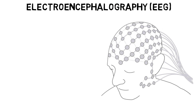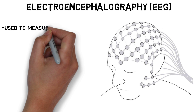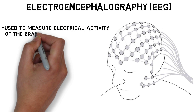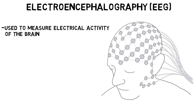Electroencephalography, or EEG, is a technique used to measure the electrical activity of the brain. In EEG, electrodes are most commonly placed on the scalp of a patient, primarily to detect the electrical activity of neurons in the cerebral cortex.